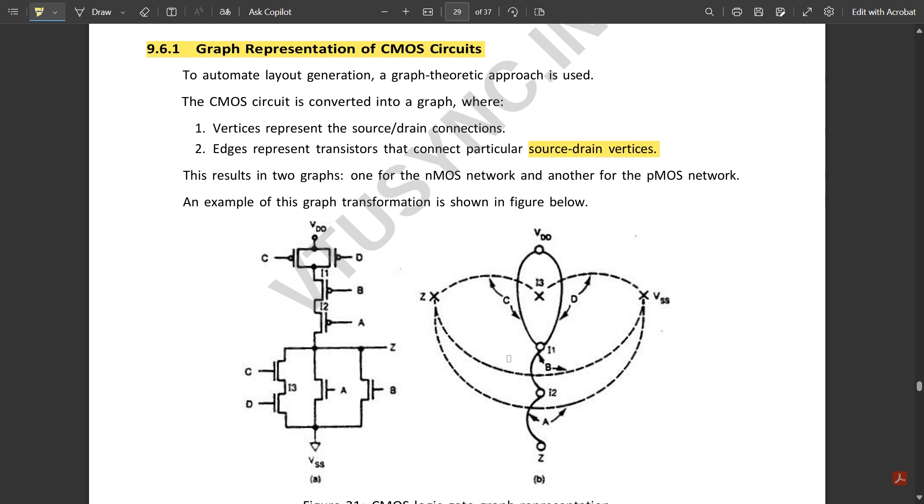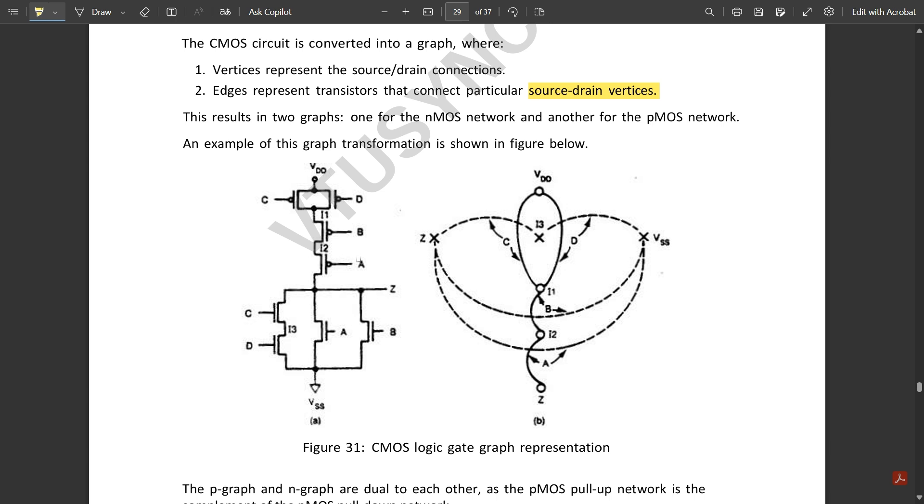An example of this graph transformation is shown below. You see here this is one simple expression, A plus B plus CD. For this, they have drawn the CMOS logic design schematic in the pull-up and pull-down parts, consisting of pMOS and nMOS transistors.